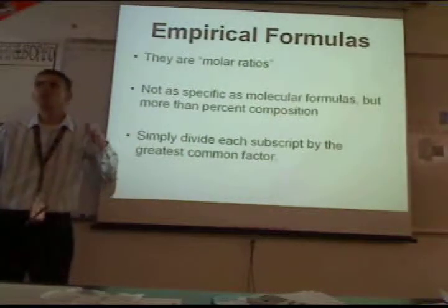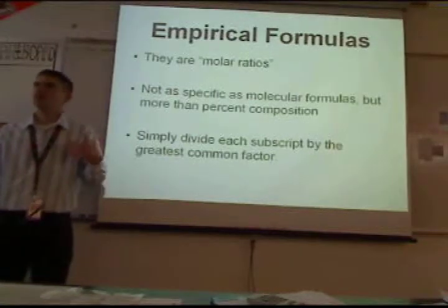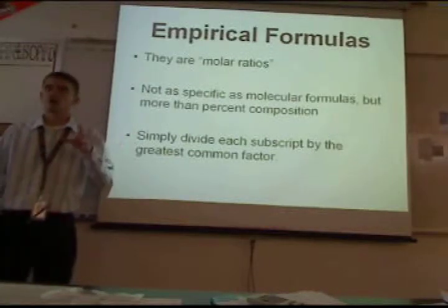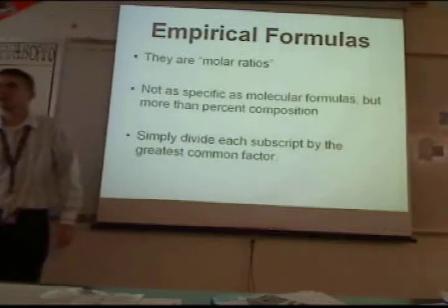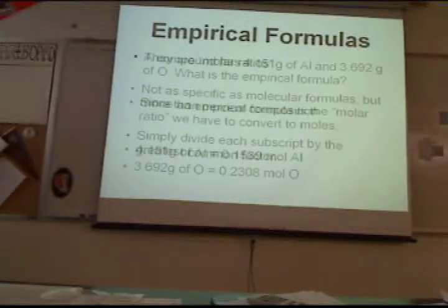So N2O4: the greatest common factor is two. You divide both by two and you get N1O2. Just leave the one implicit — it's like reducing a fraction.